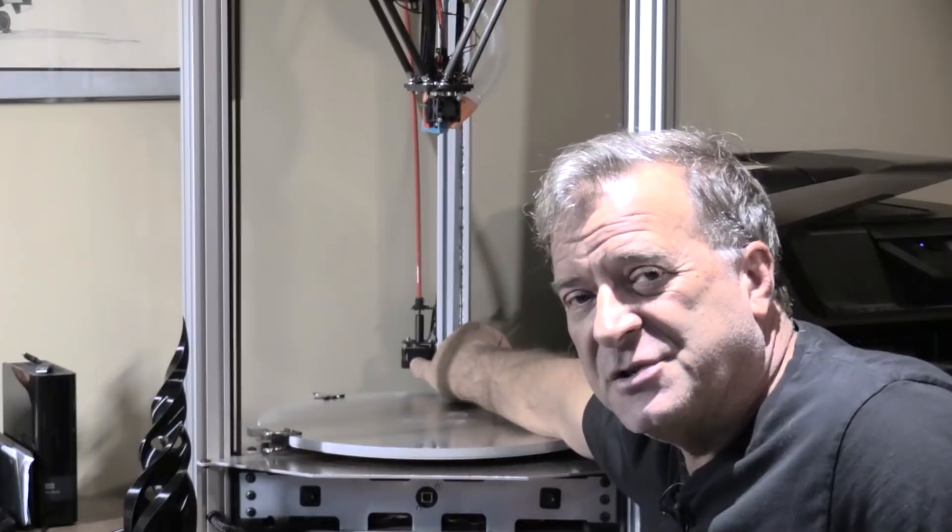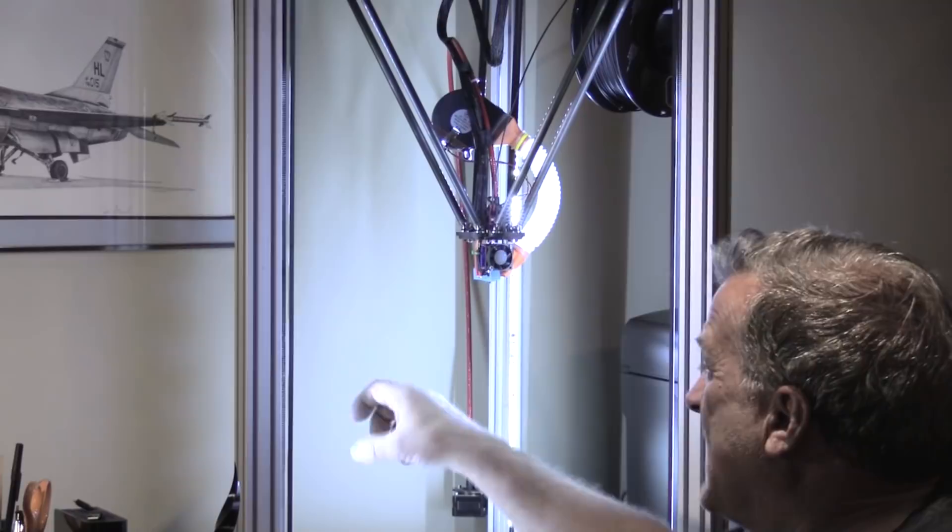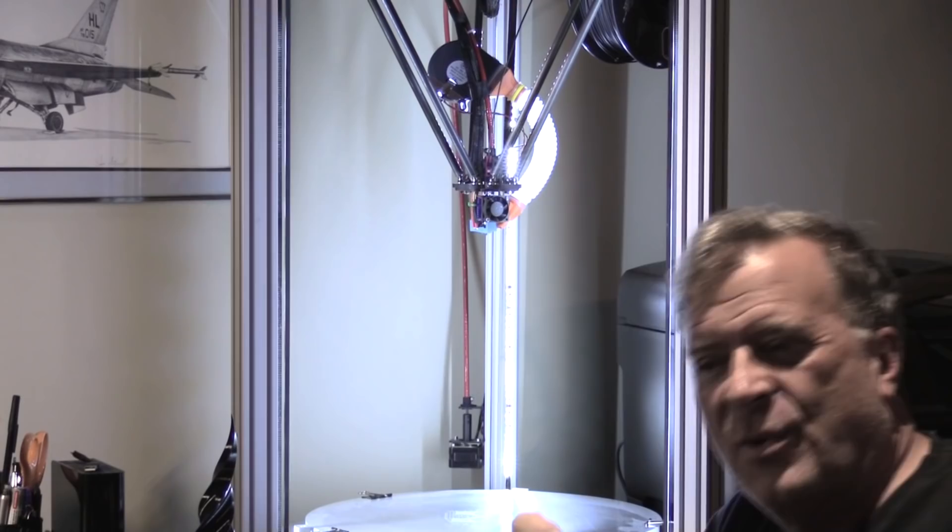And hiding in the back here, this is actually the extruder motor. And then it's just got a drive cable that runs up through this orange tube. He's reduced unsprung weight.